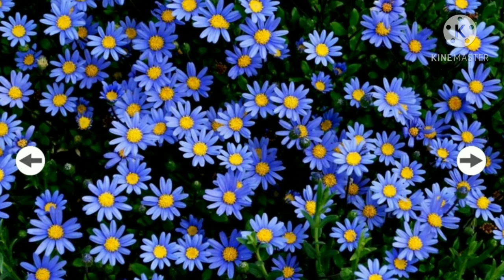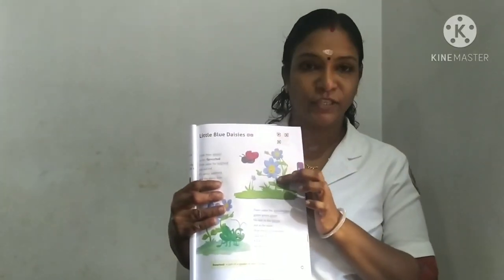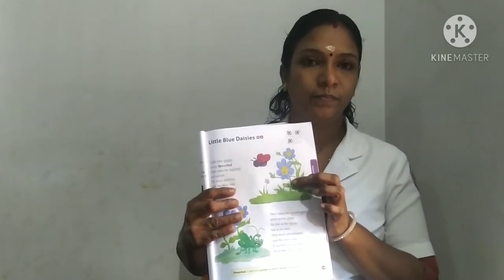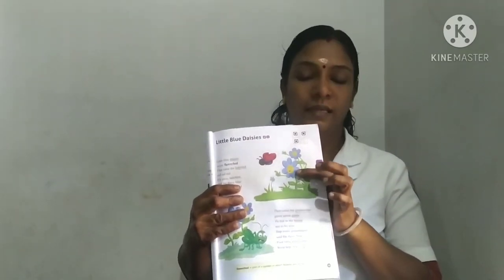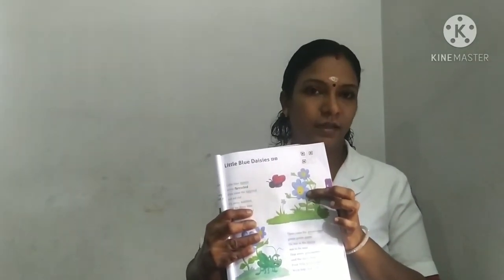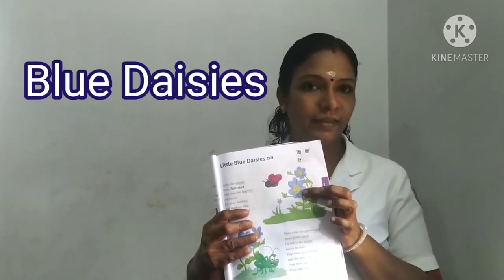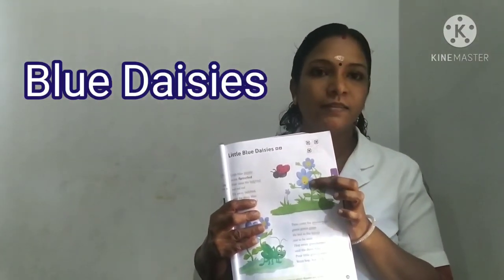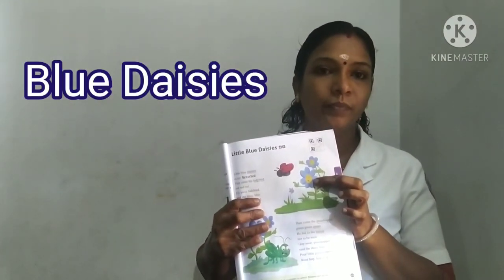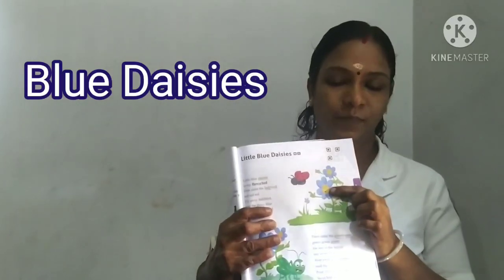What do you see in this picture? These are flowers — these flowers are blue daisies. What is the name? Blue daisies.